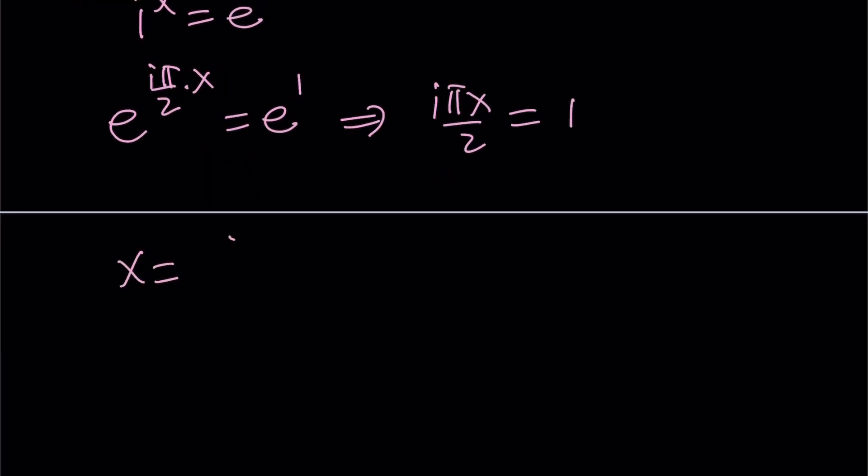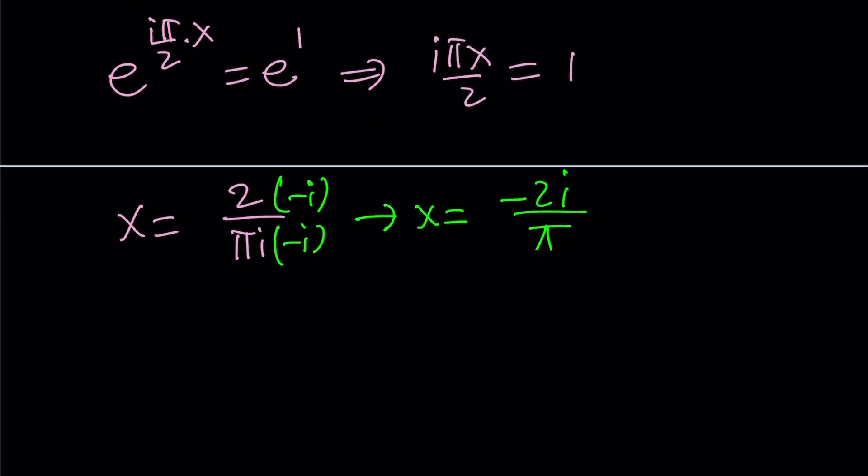x is just going to be 2 over pi i multiply by negative i again. And you're going to get the following. From here, x is going to be negative 2i over negative pi i squared. But negative i squared is 1, so it's just going to be negative 2i over pi. Of course, this is not the whole story. This is just a particular solution taking the, what is it called, the principal branch. But there are multiple branches. So that's why we need to add something to this. And how do you find that? This is how you can find it.